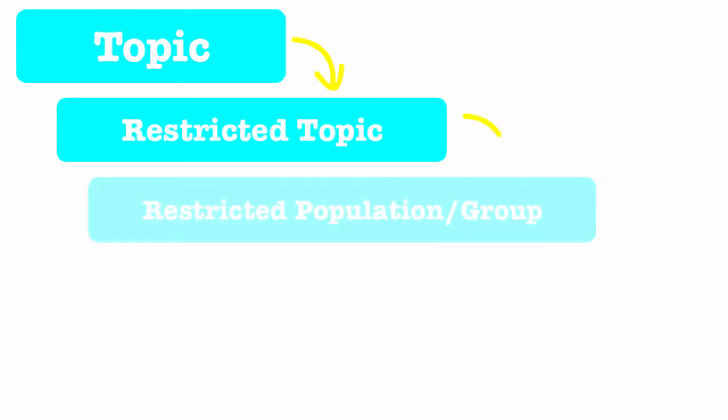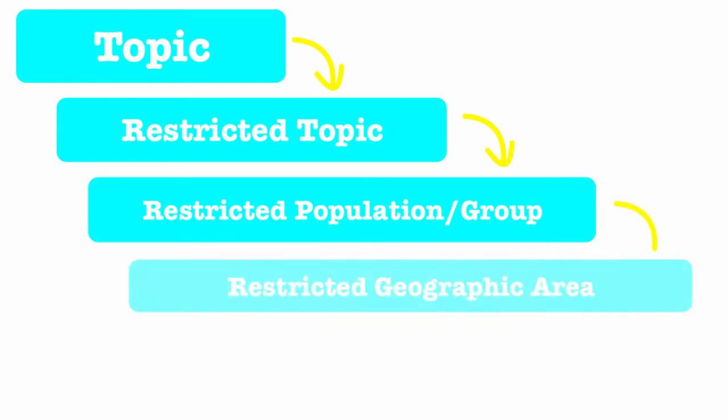A good way to begin formulating a question is to identify your broad topic. Then think of a restricted topic within that topic. With that in mind, think of a group that might be affected by the topic or issue in a particular way and then think of a geographic area to focus on. Use what you learned in your initial reading on your topic to help you choose an interesting group and geographic area to focus on.